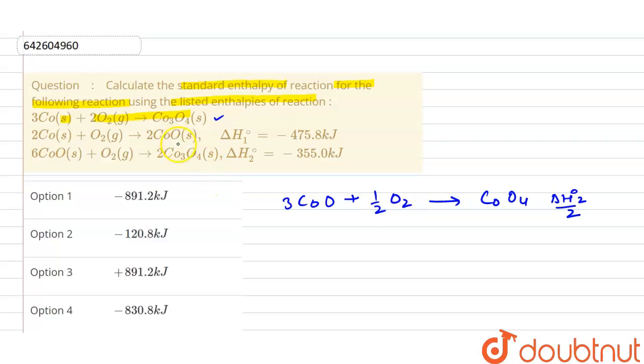For the second reaction, what we have to do, we need three times of cobalt, but here only two times is given. So that means we can write three by two. So if you multiply by three by two, this two will get cancelled out so it becomes three times of this value.